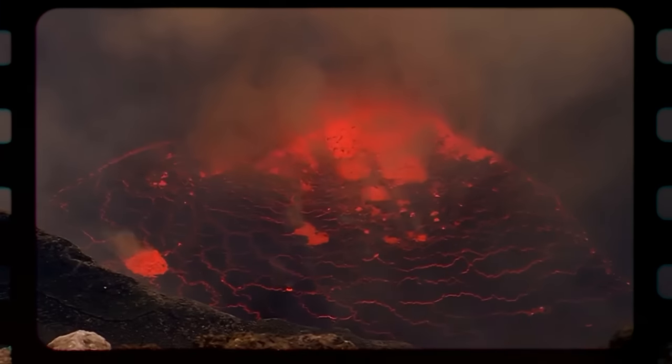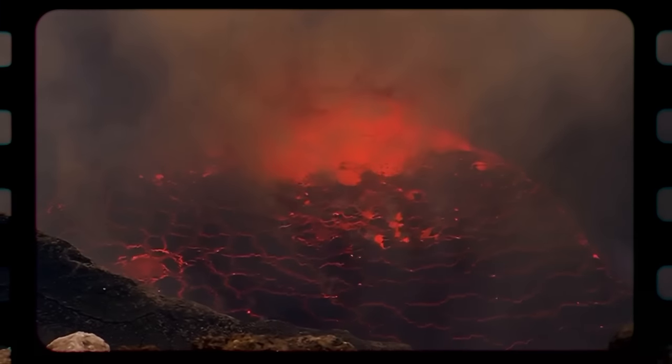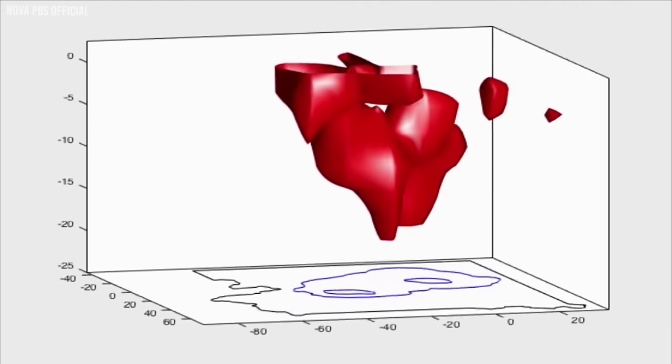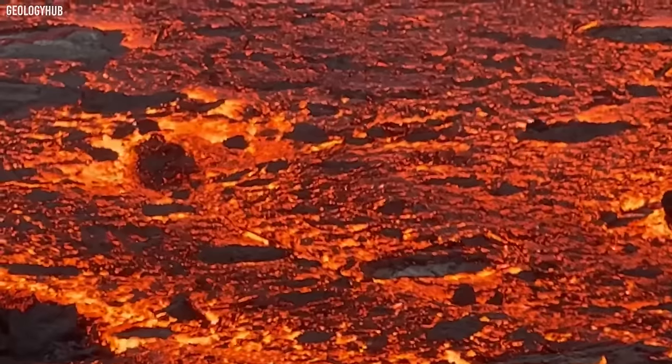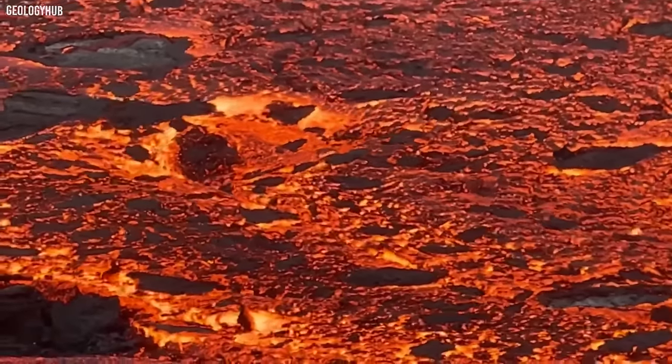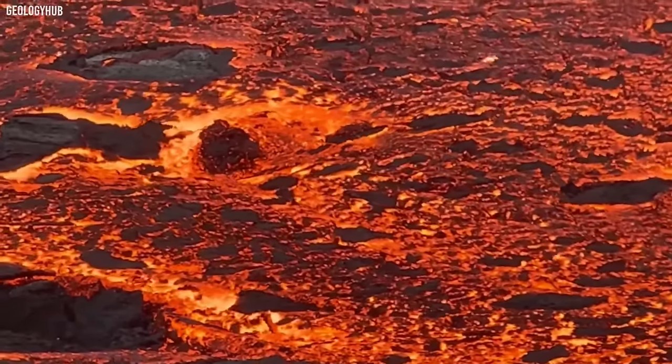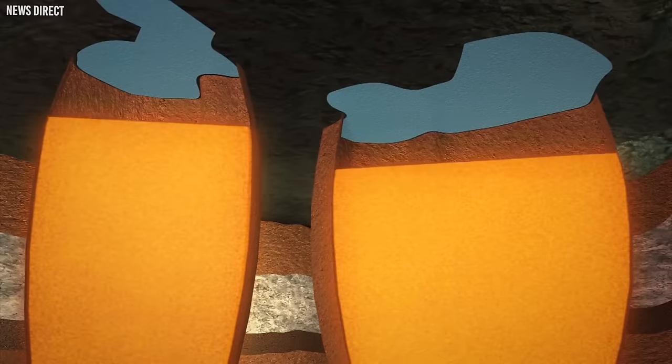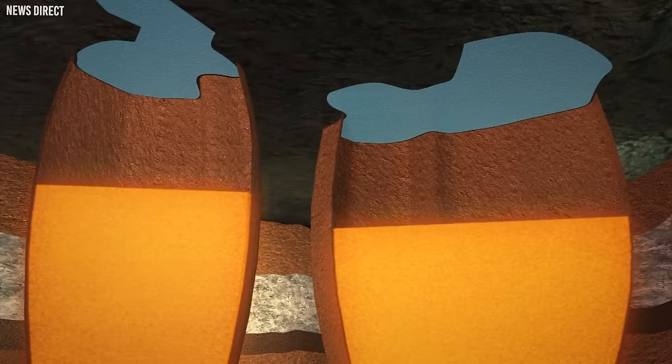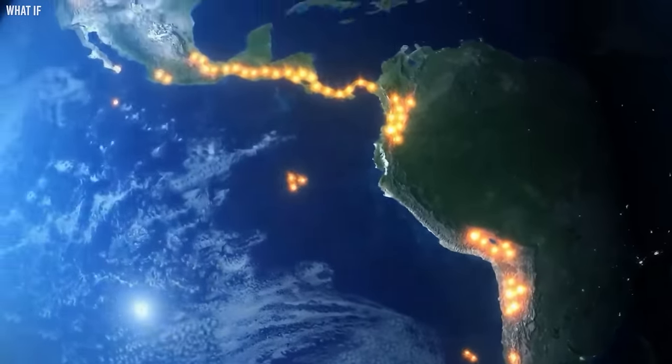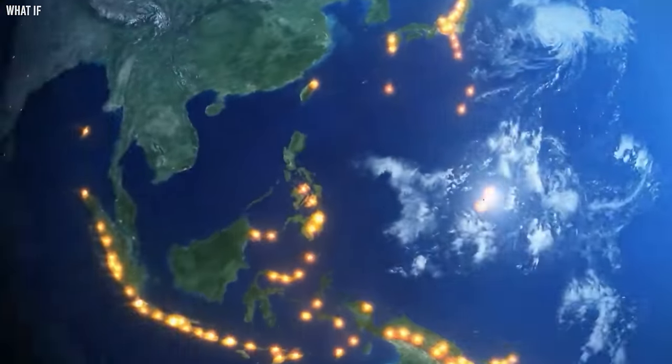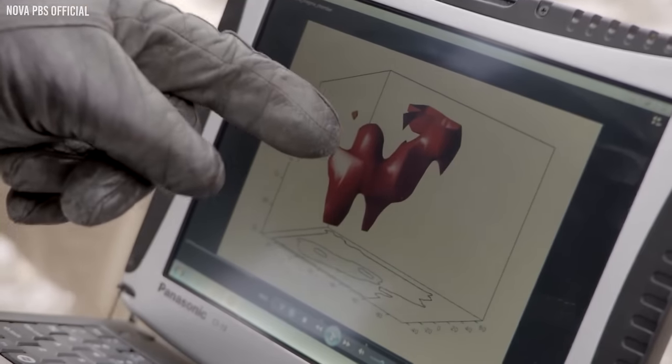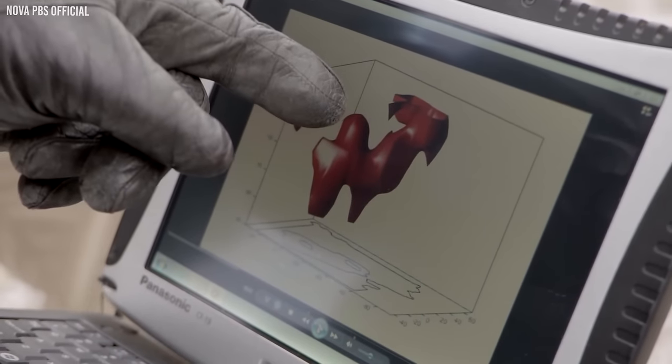For a volcanic eruption to occur, there needs to be a significant amount of liquid magma, typically between 35-50% of the total magma present. The higher the volume of magma, the greater the likelihood of an eruption. It's worth noting that the increase in magma volume observed in recent studies isn't because the Earth is creating new magma but because scientists are better able to analyze existing data.